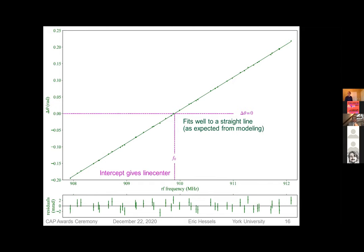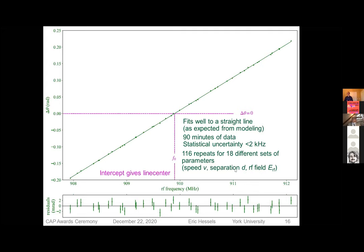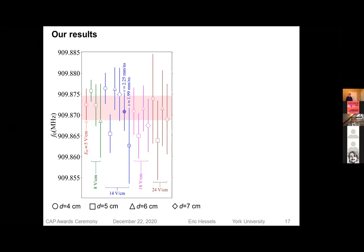Fits well to a straight line. We actually did about a century CPU of modeling to fully understand this line shape. And that was necessary to understand all the systematic effects. You see the residuals say that we did get the line shape correct. This is about 90 minutes of data and has a statistical uncertainty of two kilohertz. And that's beyond what we really wanted to get. So that's great, except we still had to spend 10 years doing this measurement, studying systematic effects. In the end, we used 116 repeats of experiments like this. Most of them taking much longer than 90 minutes. And we use different parameters, different speeds of the beam, different separations between the two separated fields, different field strengths, and so on.